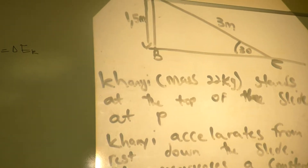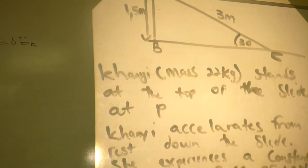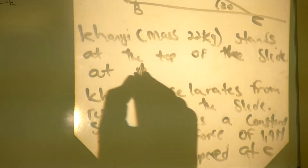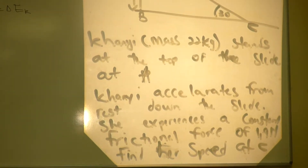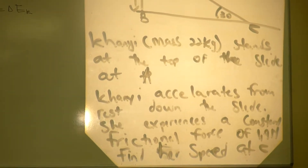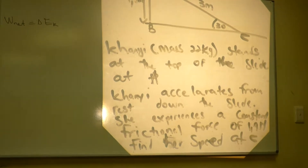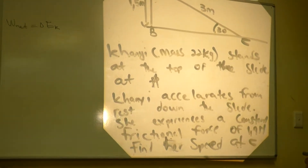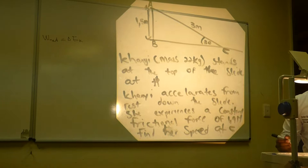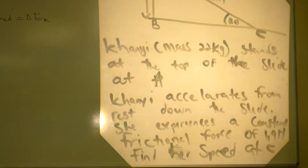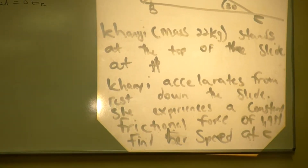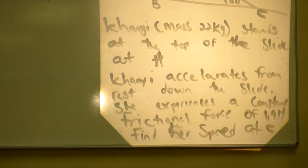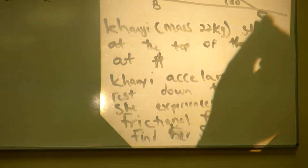Kylie slides down the ramp, accelerating from rest. She experiences a constant frictional force of 1.9 newtons. We need to find the speed of Kylie at point C.